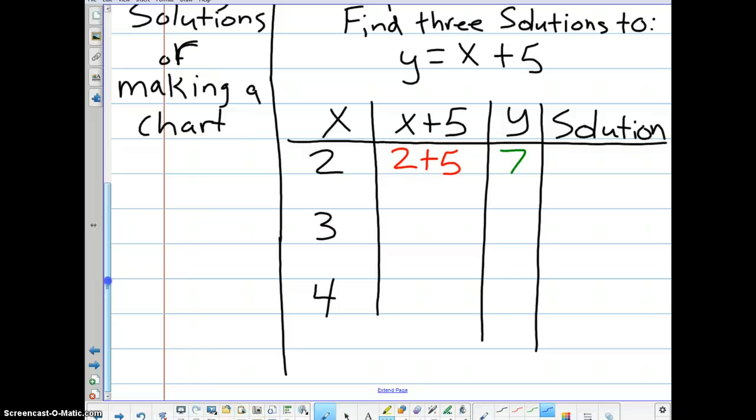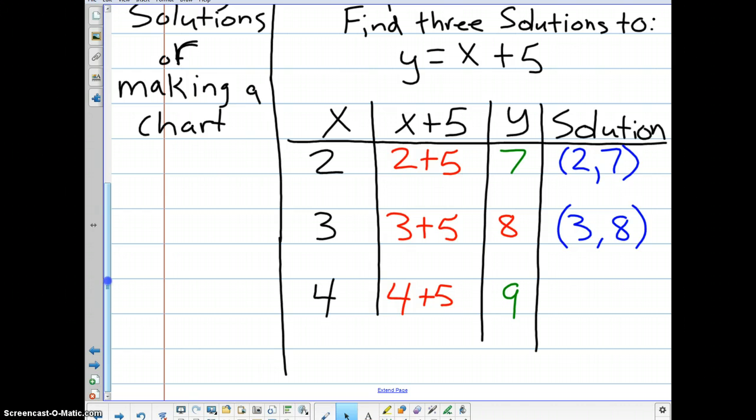2 plus 5 is 7. And now we have come up with an ordered pair solution. Our solution would be 2 comma 7. Okay? Same thing for 3. That would be 3 plus 5. 3 plus 5 is 8. And then our ordered solution would be 3, 8. And finally, plugging in our last X value, 4 plus 5, that would give us 9. And then we would have the ordered pair 4, 9.